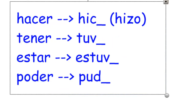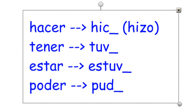Let's take a look at what the stems of the verbs do, because they do something strange. Hacer goes to hic-, except in the él/ella/usted form where the c changes to a z — so hizo — otherwise we'd be saying eco, but we want iso. Tener goes to tuv-. Estar goes to estuv-. Poder goes to pud-.